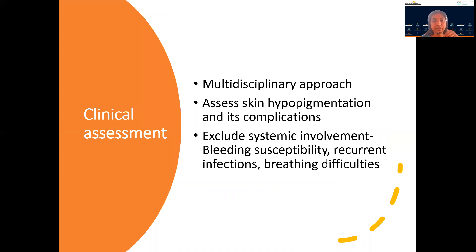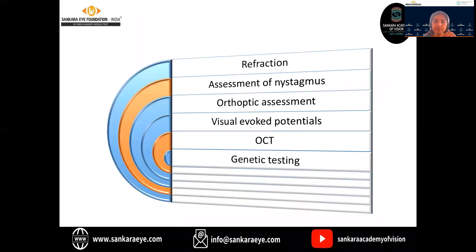Clinical assessment starts with a multidisciplinary approach. First, we have to assess the skin hypopigmentation and take protective measures to prevent further complications. Then we have to exclude systemic involvement in the form of bleeding susceptibility, recurrent infections, and breathing difficulties, which are all common with the syndromic associations. Then we have to look for refraction, assessment of the nystagmus, orthoptic assessment, VEP, OCT, and genetic testing.